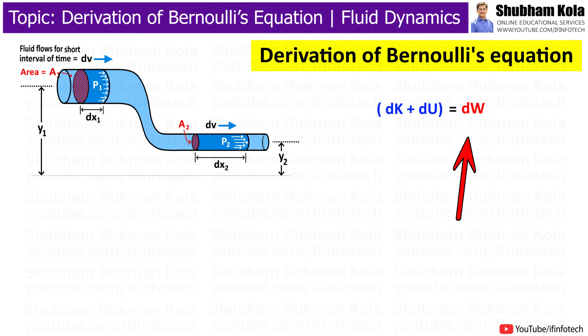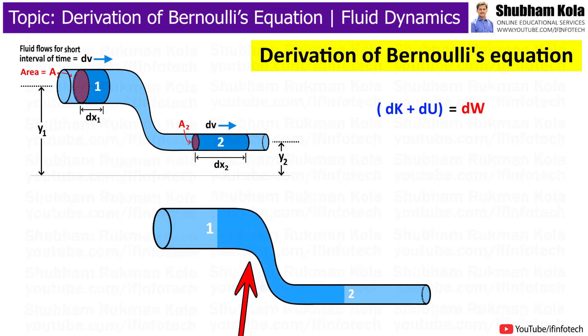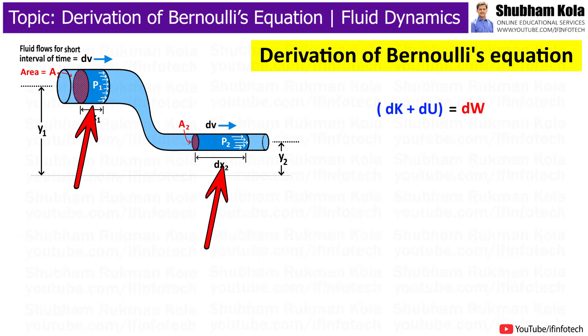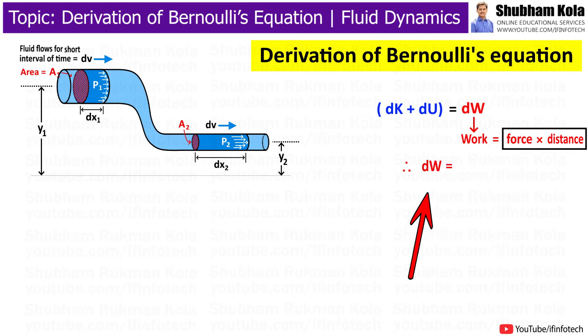First, we will try to find the external work done on the water, dW. None of the water between point 1 and 2 can do external work since that water is all part of our energy system. The only pressures that can directly do external work on our system are p1 and p2. Work can be found with the formula, force into distance.